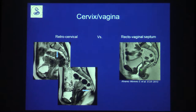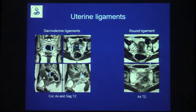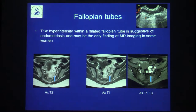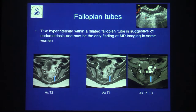Sacro-uterine ligaments can be seen on both sides, one often more involved than the other. Round ligaments are frequently overlooked — always look for thickening of these structures. Fallopian tube involvement — a dilated tube with blood content — can be the only sign of endometriosis, seen on T1, T2, and corresponding ultrasound images.